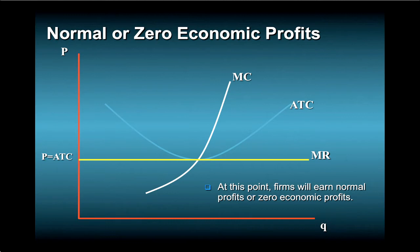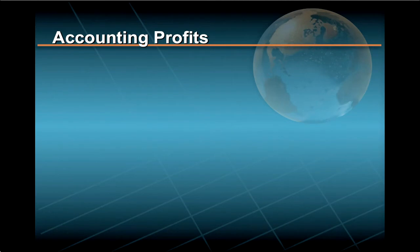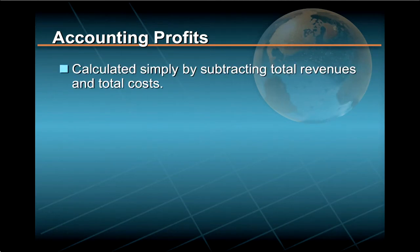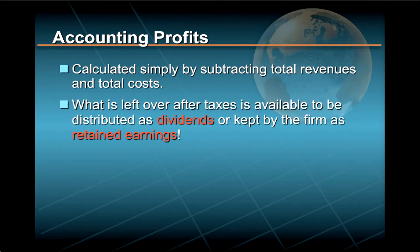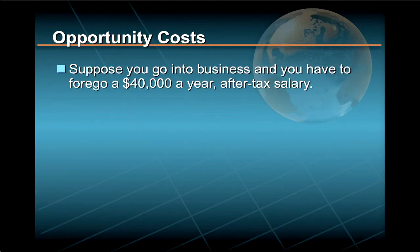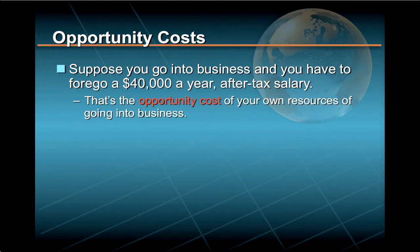To do so, let's go back to our distinction in the last lecture between accounting profits and economic profits. Recall that accounting profits are calculated simply by subtracting total revenues and total costs, and what is left over after taxes is available to be distributed as dividends or kept by the firm as retained earnings. Now suppose you go into business for yourself, and in order to do so, you have to forego a $40,000 a year after-tax salary — that's the opportunity cost of your own resources of going into business.